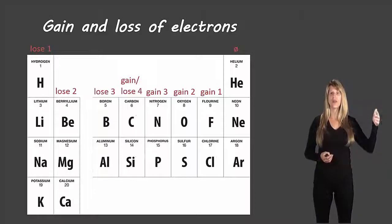The next column now will gain three electrons, the next column gain two, gain one, and then when we get to the noble gases, these aren't likely to gain or lose electrons. They very rarely form any sort of compounds and they don't form ions.